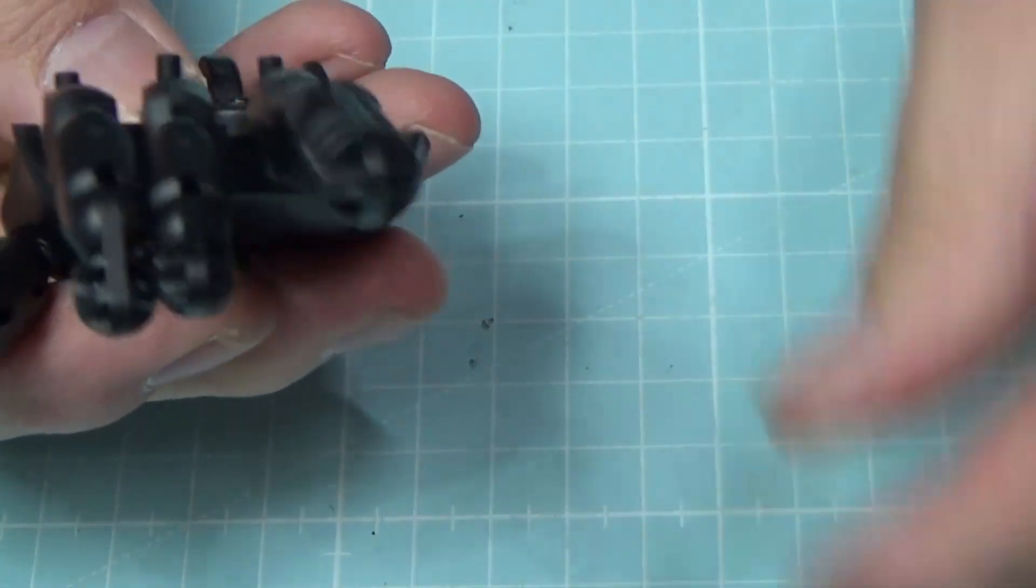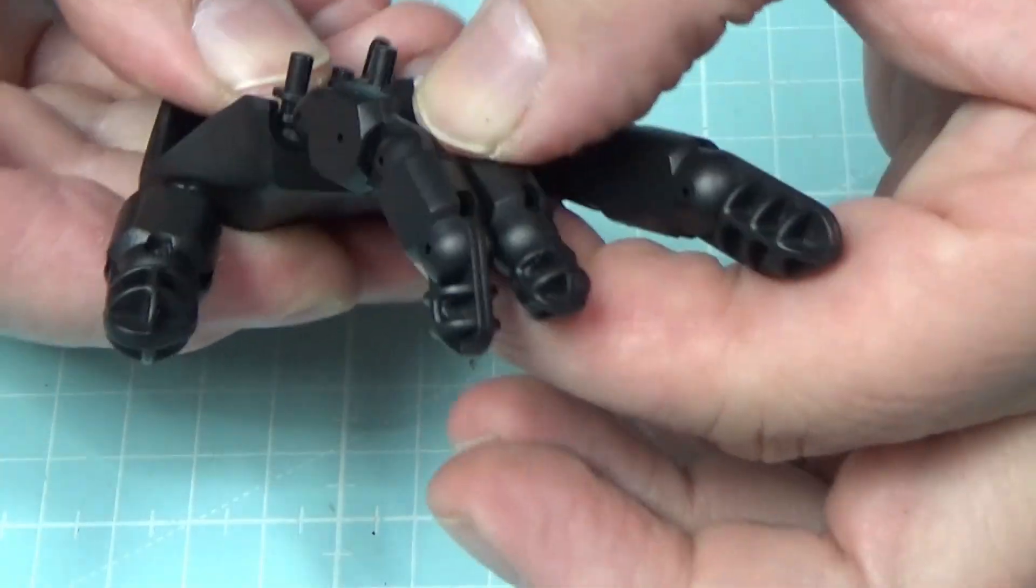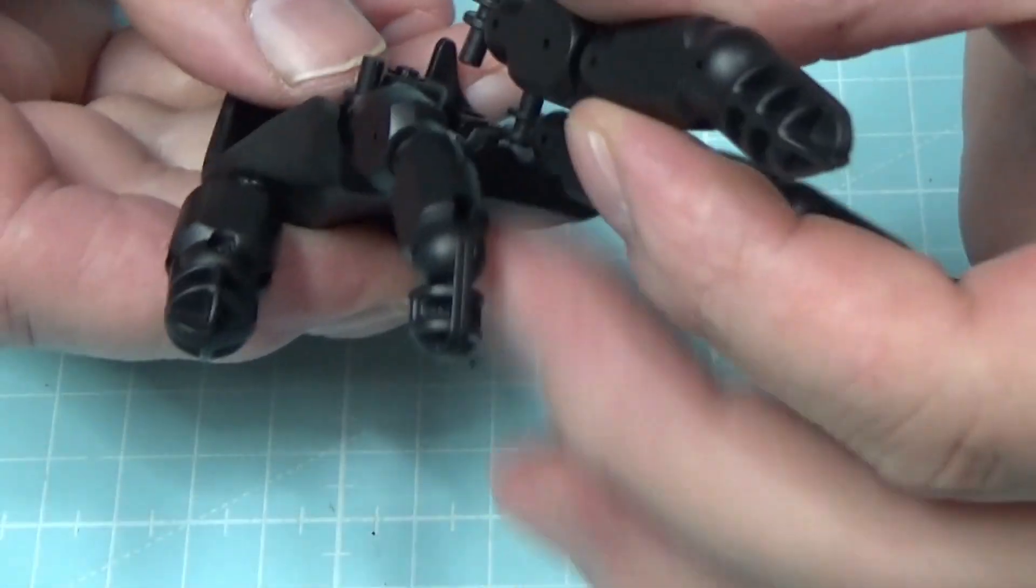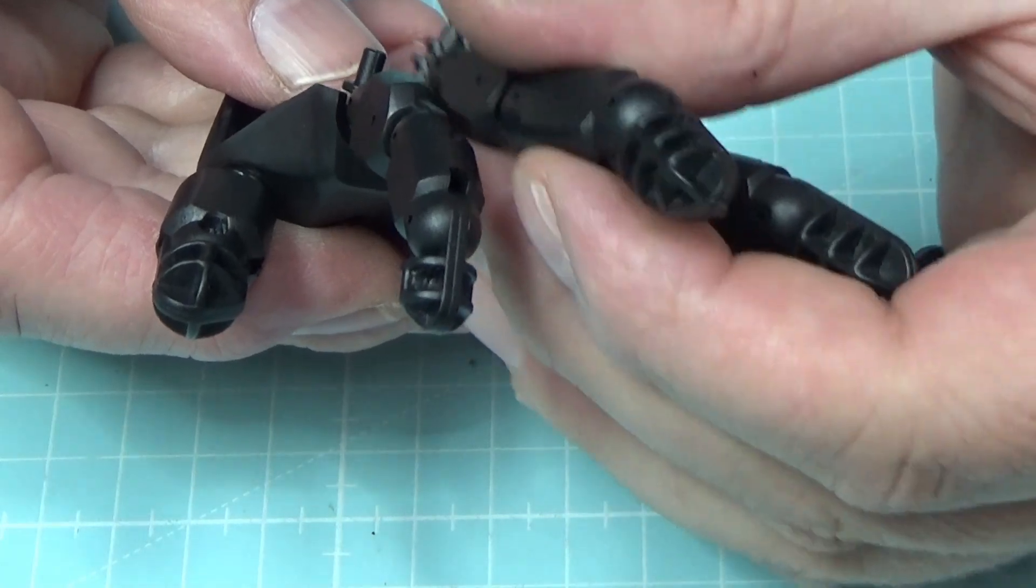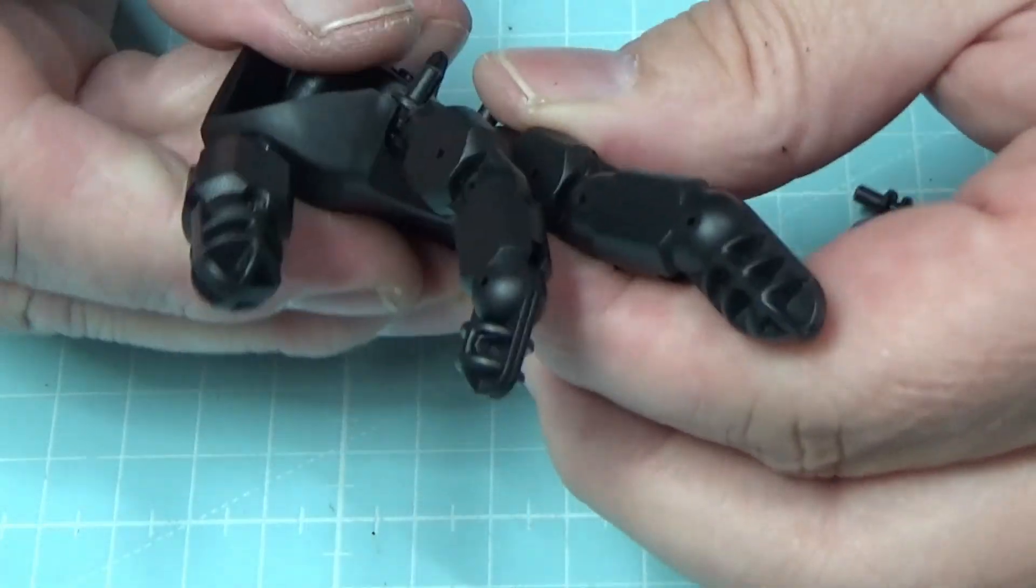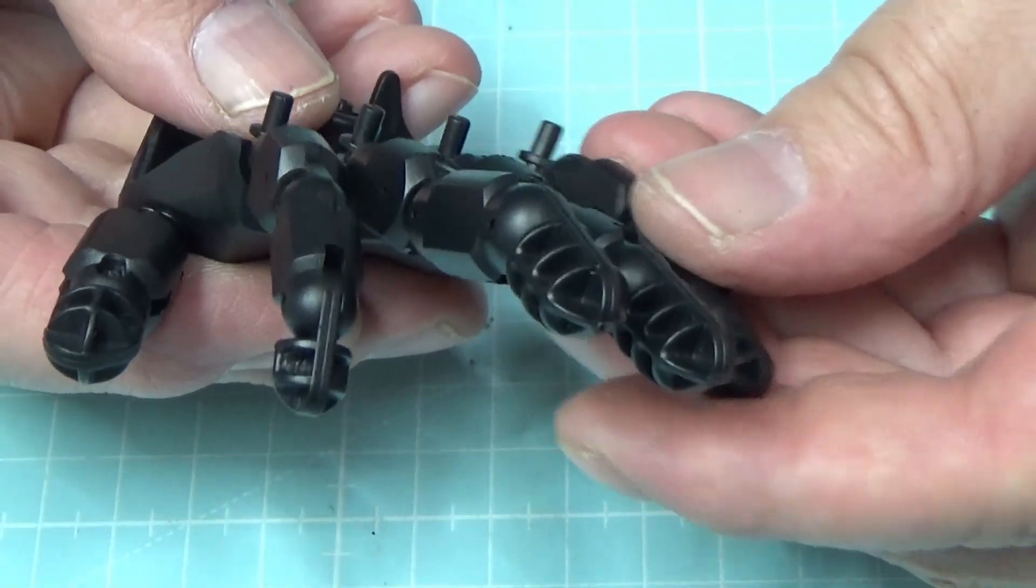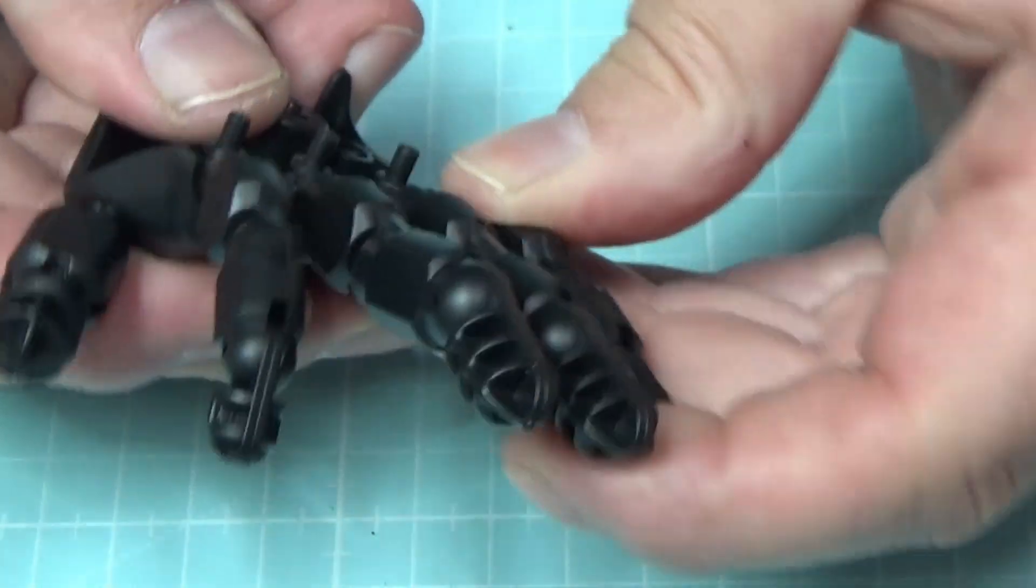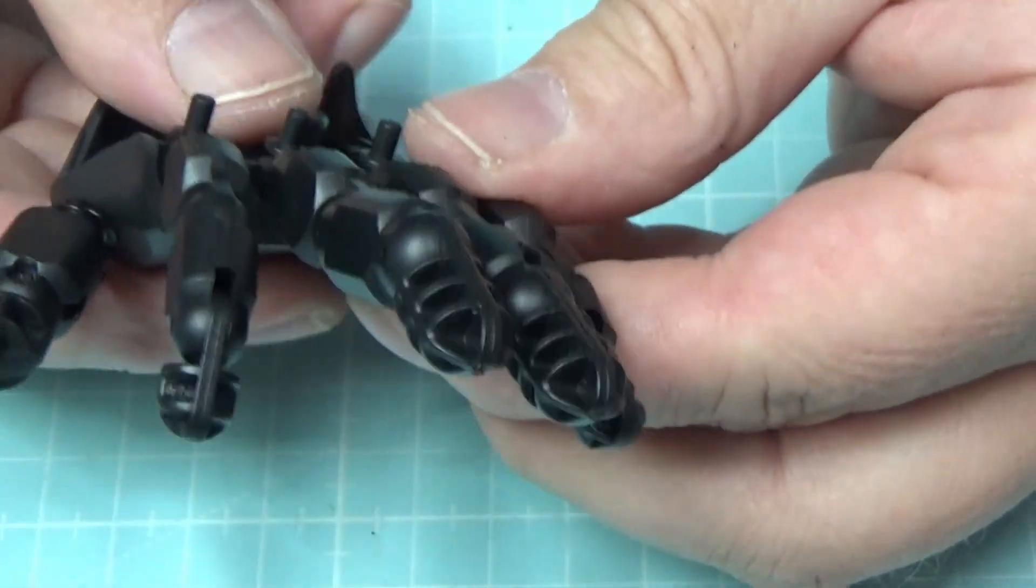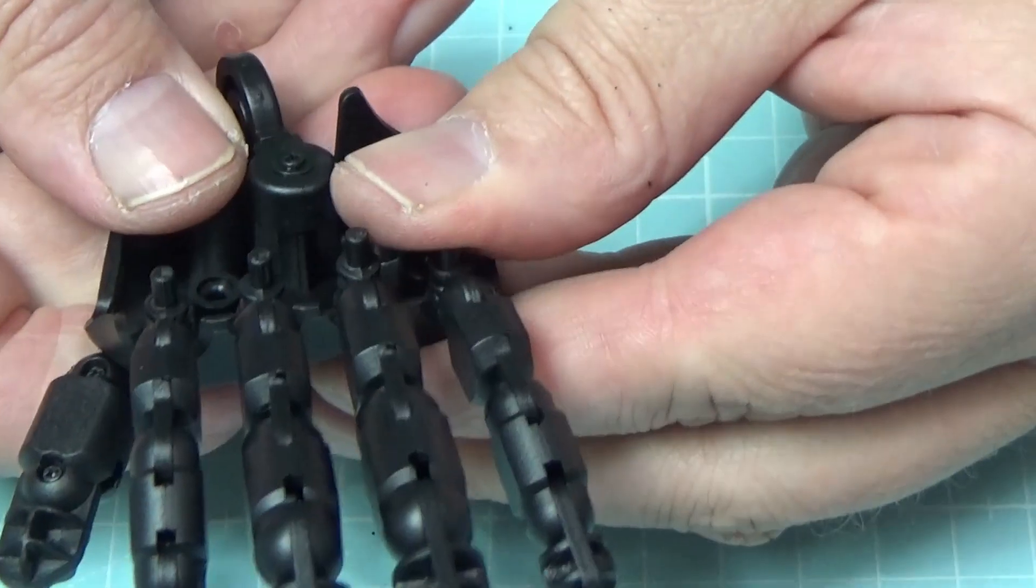Jetzt kommt dann der Zeigefinger ist ein kleinerer. Kommt dann hier reingesteckt in das Plastik. Dann nehmen wir einen größeren. Natürlich so gucken, dass die Fingerkuppen richtig rum sind. Dann haben wir einen größeren Finger. Noch einen größeren Finger. Dieser ist dann doch falsch. Das ist ein kleiner. Aufpassen. Dann sieht das nachher komisch aus. Aber gut, machen eine Faust. Dann sieht man das nicht mehr so.